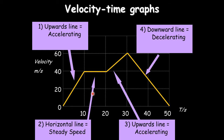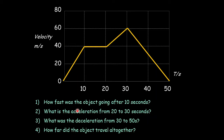Work out the area of the triangle, add it to the rectangle areas. Exam question: how fast after 10 seconds? — 40 meters per second. Acceleration from 20 to 30 seconds: change in speed is 20 m/s in 10 seconds — 2 meters per second squared. Acceleration from 30 to 50 seconds: change is 60 m/s in 20 seconds — 3 meters per second squared, possibly with a minus sign showing deceleration.